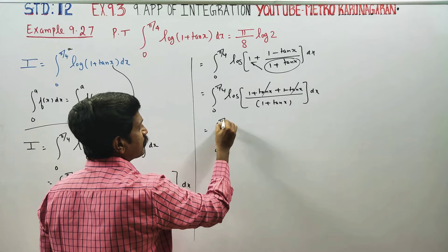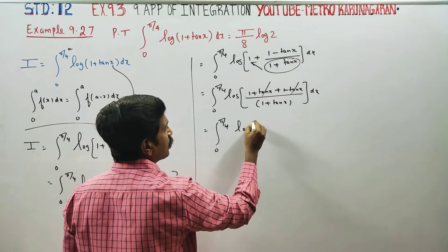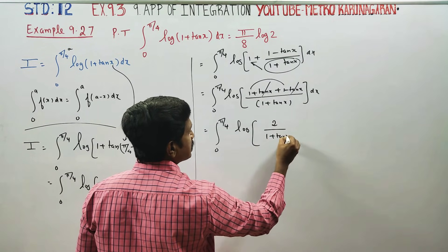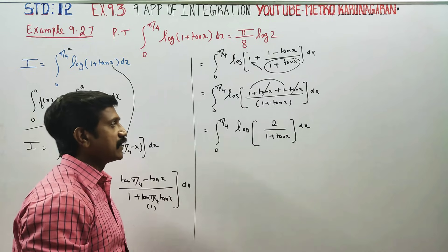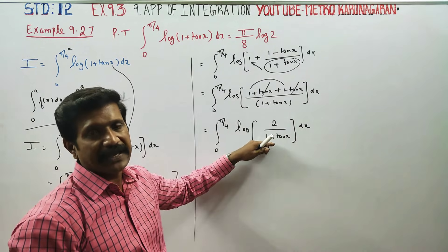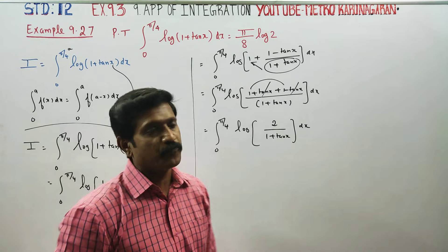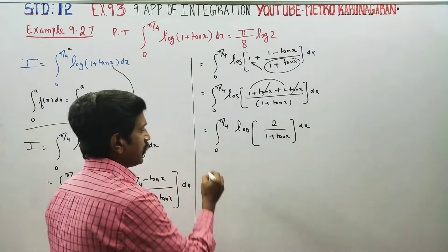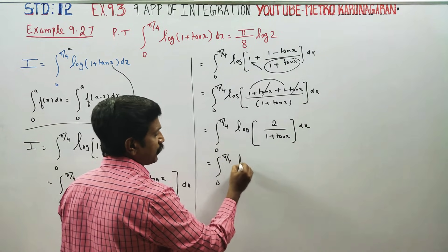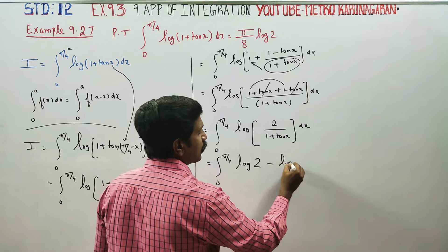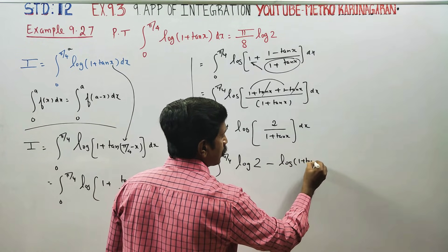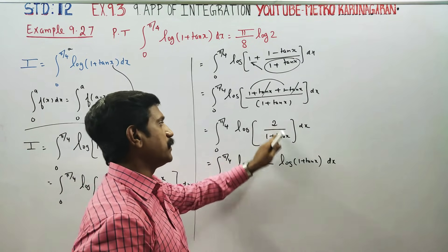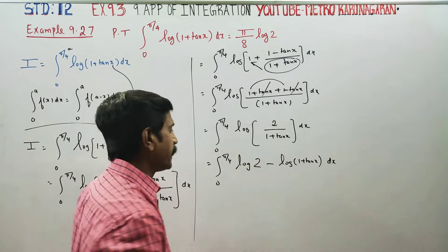After cross multiplication, tan x terms cancel and we get 0 to pi by 4, logarithm of 2 by (1 plus tan x) dx. Using log(a/b) equals log a minus log b, we separate this as log 2 minus log(1 plus tan x).